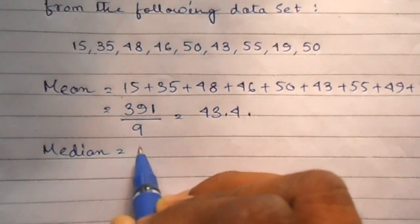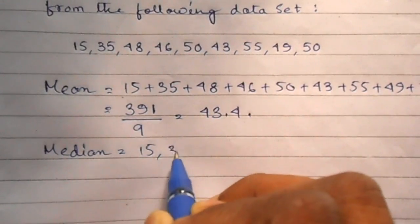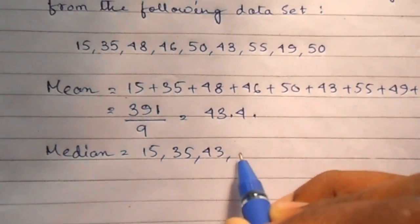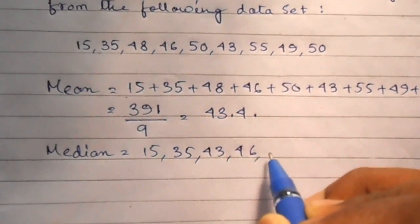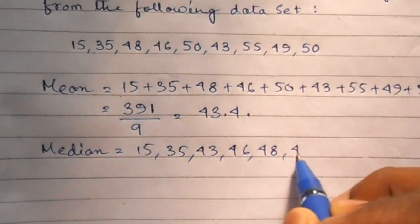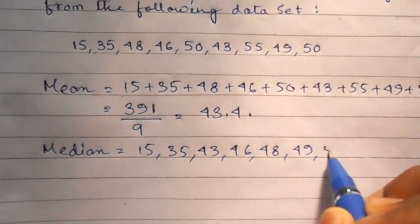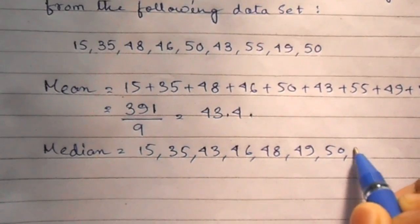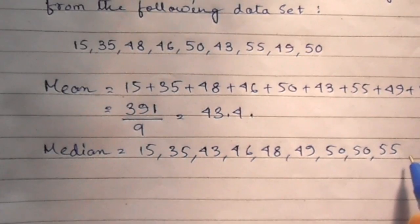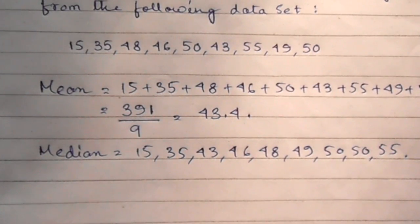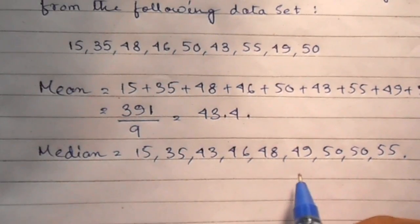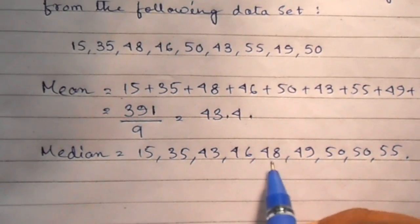That is 15, 35, 43, 46, 48, 49, 50, 50, 55. So the median is the middle number, that is 48.